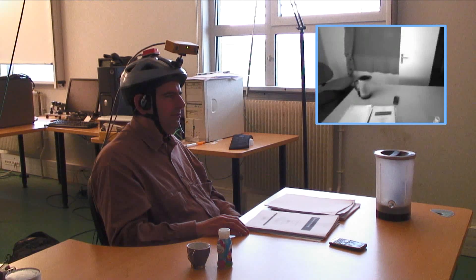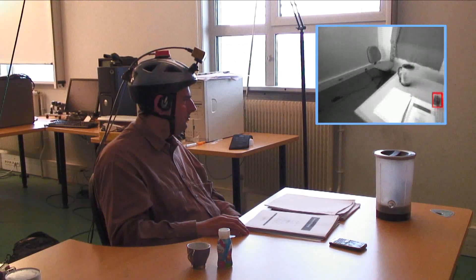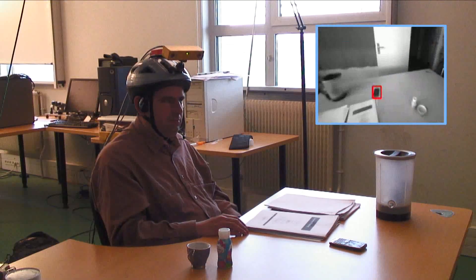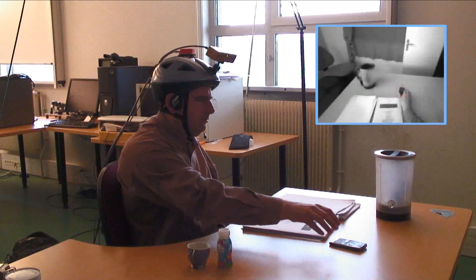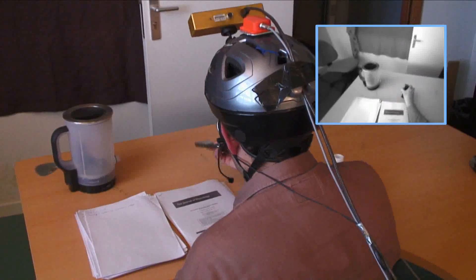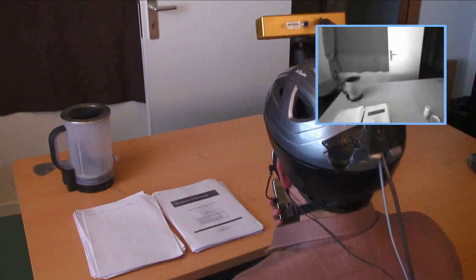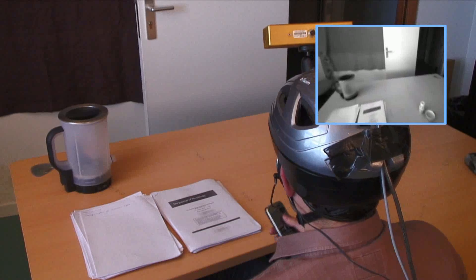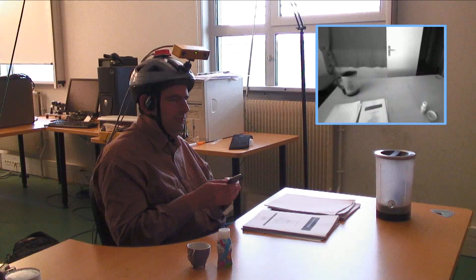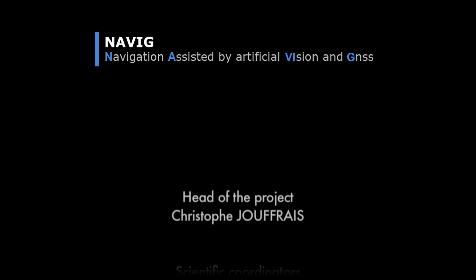The user requests: 'Locate telephone.' Just like at the end of the navigation scenario, a virtual 3D sound allows the user to locate the object, guiding the visually impaired user with 3D sounds.